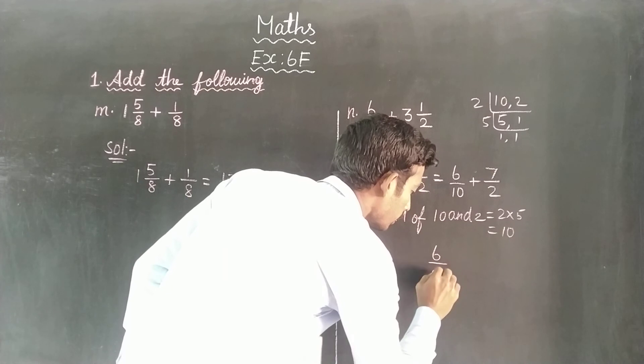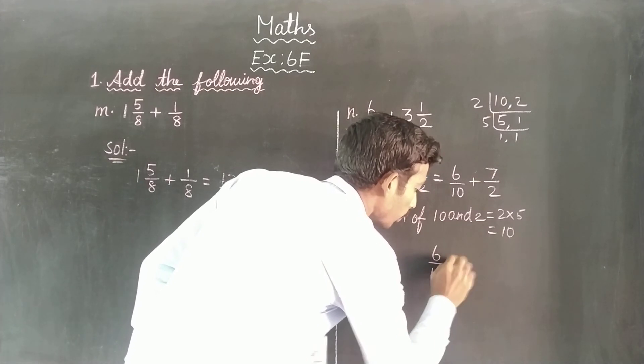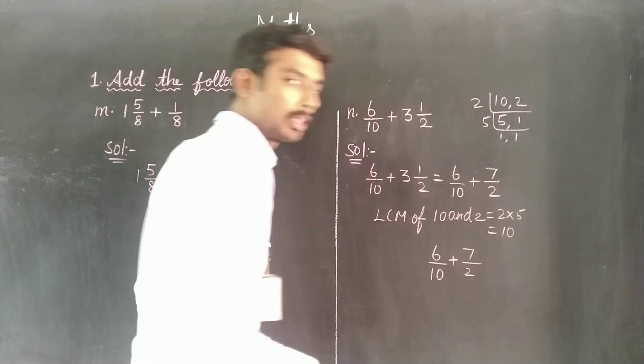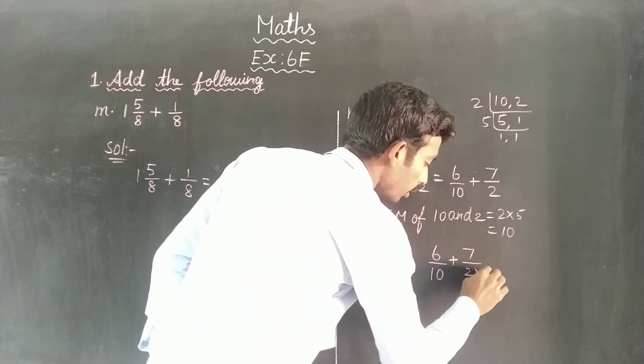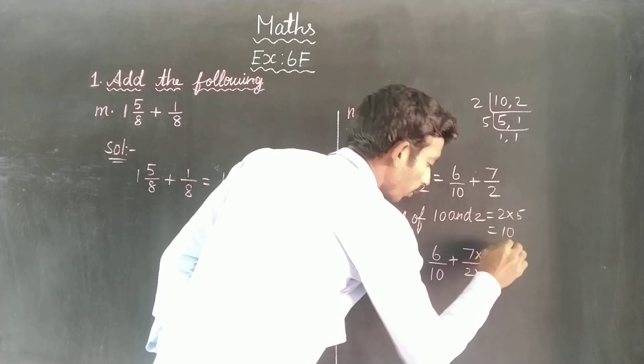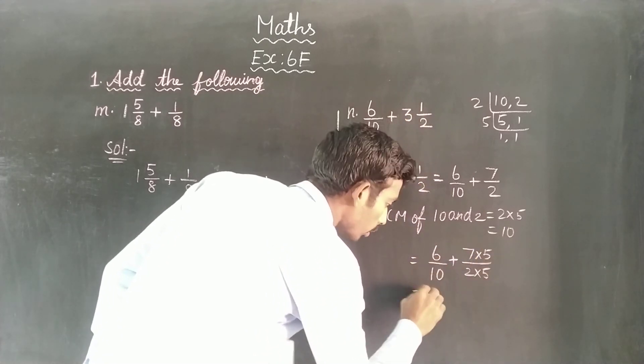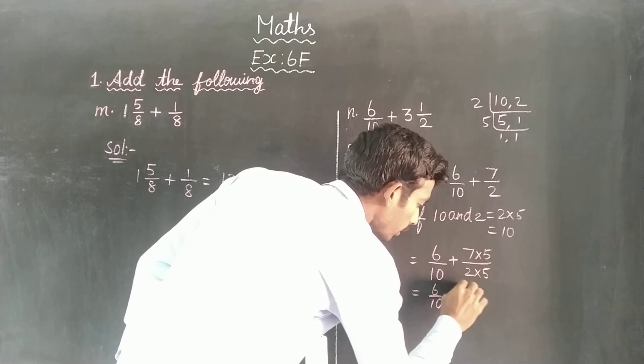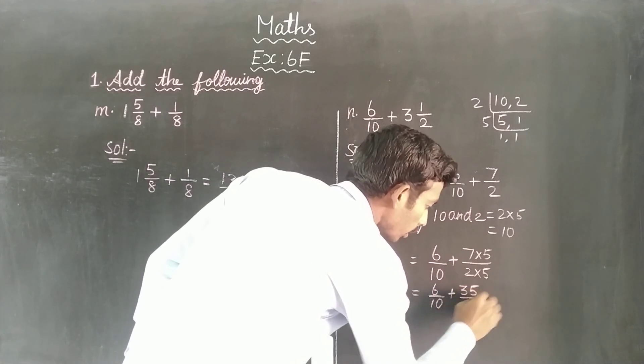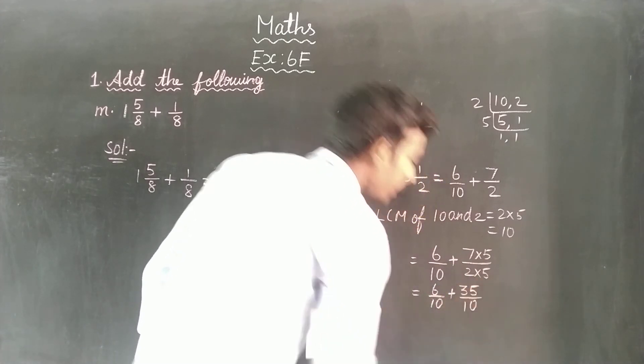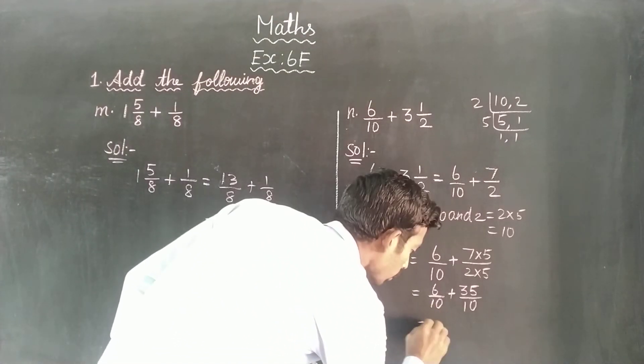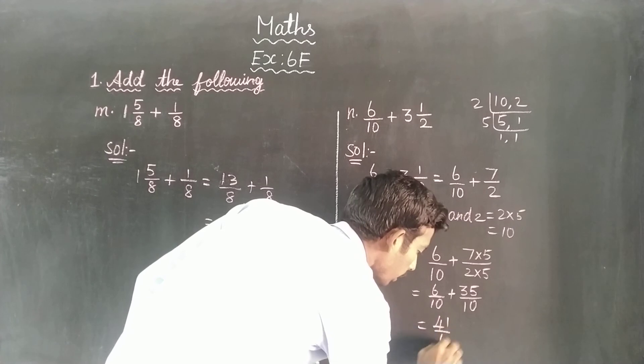So 6/10 plus 7/2. Multiply by 5 in the numerator: 5 times 7 is 35. So 6/10 plus 35/10. Both have denominator 10, so we add to get the answer: 41/10.